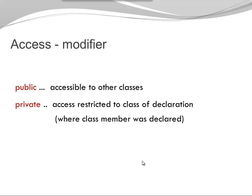Let's have a look at access modifiers. Java has a number of access modifiers. At this point, I want to look at public and private. The public access modifier is the most permissive access modifier. It allows you to access the public member from other classes. Different from a private access modifier, which is the most restrictive one, it allows access only within the own class where the private member was declared.